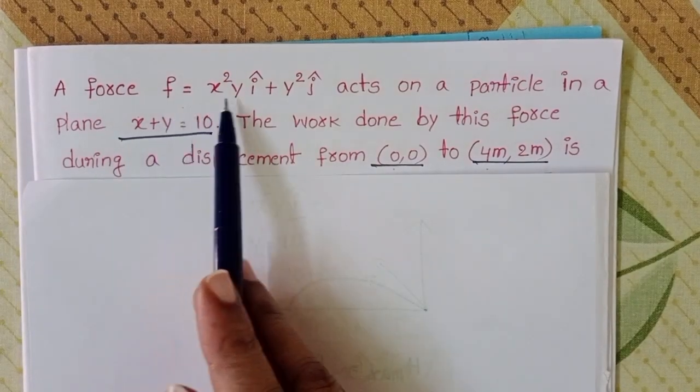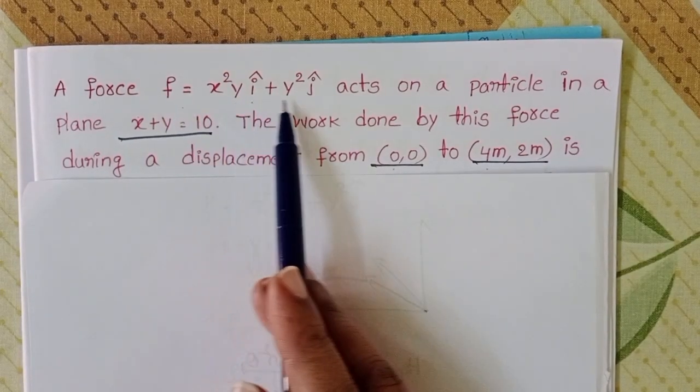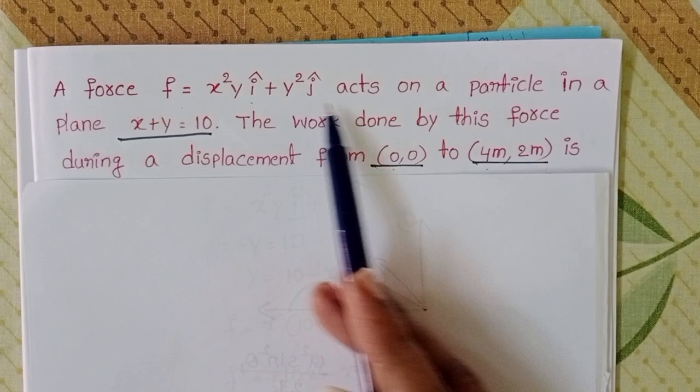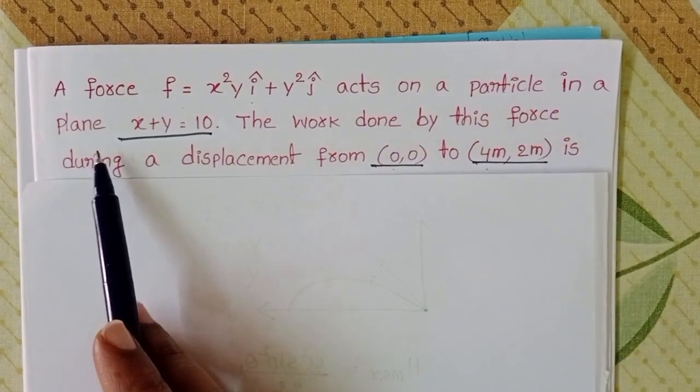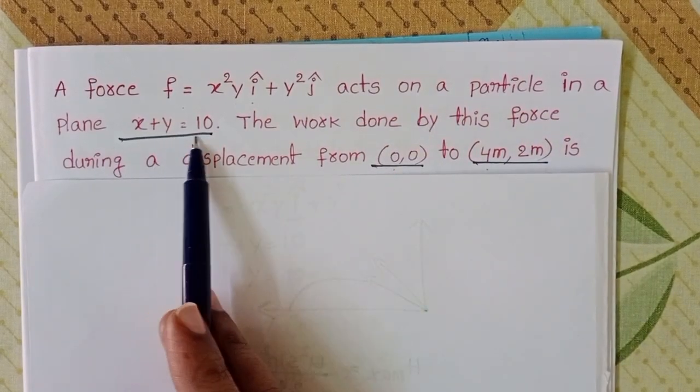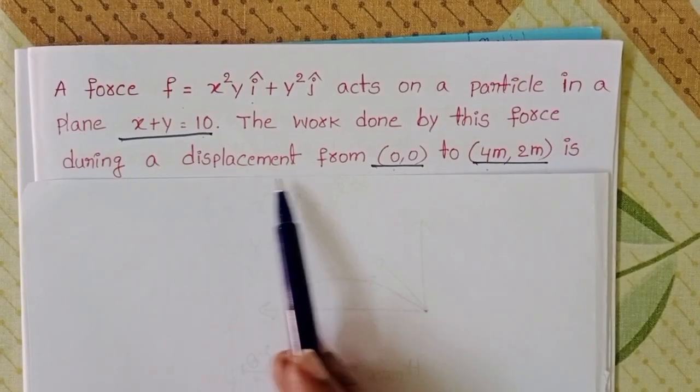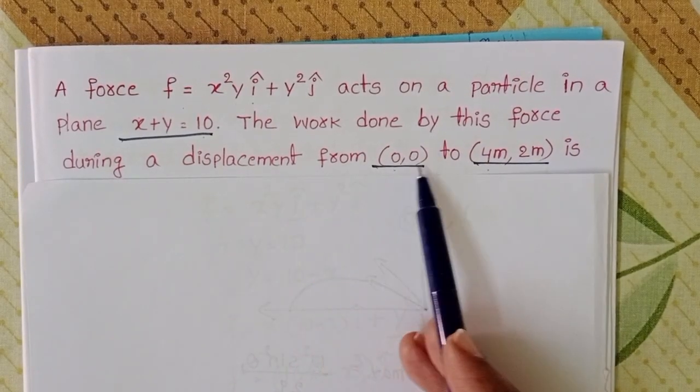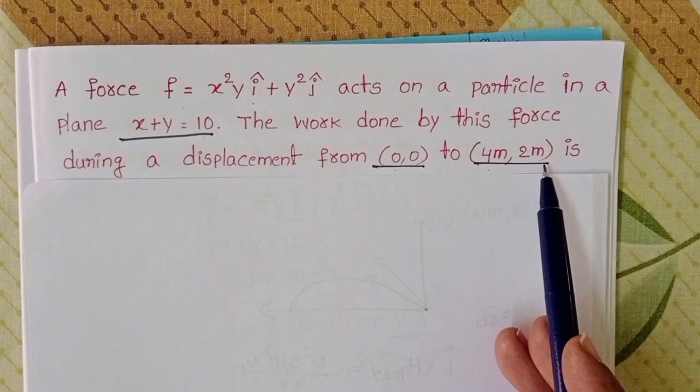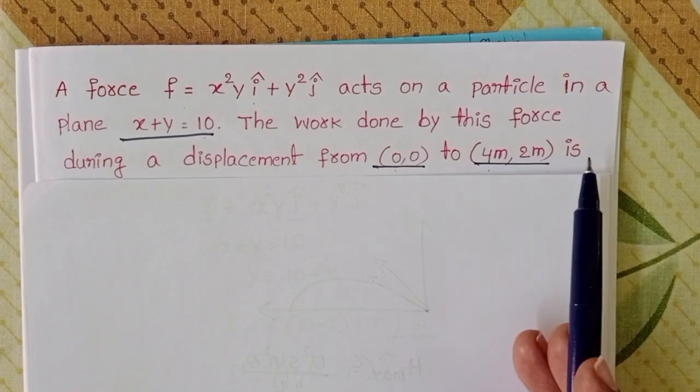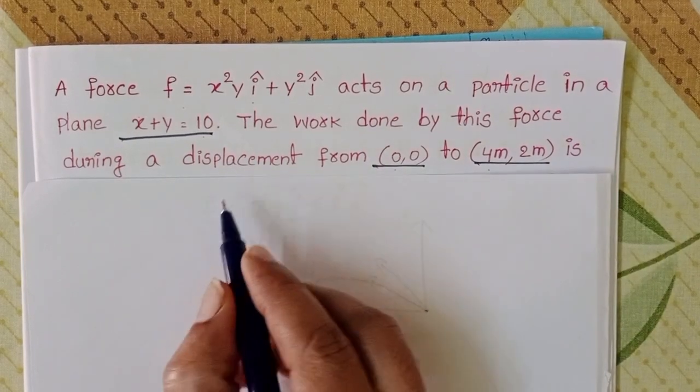A force F equals x² y î plus y² ĵ acts on a particle in a plane x plus y equals 10. The work done by this force during a displacement from (0,0) to (4m, 2m) is dash joules.